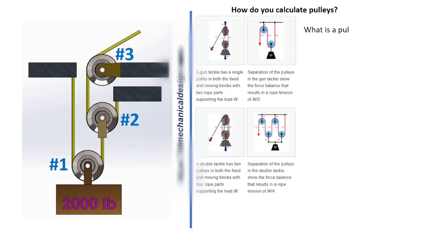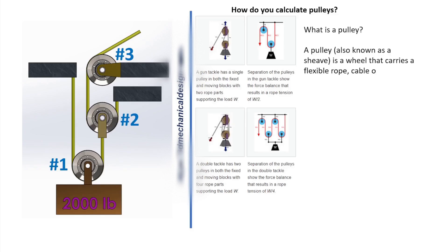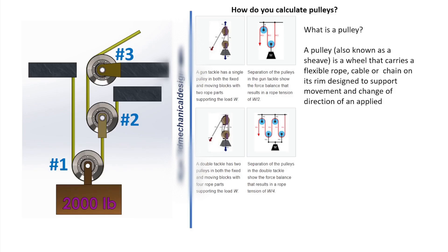What is a pulley? A pulley, also known as a sheave, is a wheel that carries a flexible rope, cable, or chain on its rim. It is designed to support movement and change of direction of an applied tensile force, and is mainly used for lifting heavy weights.